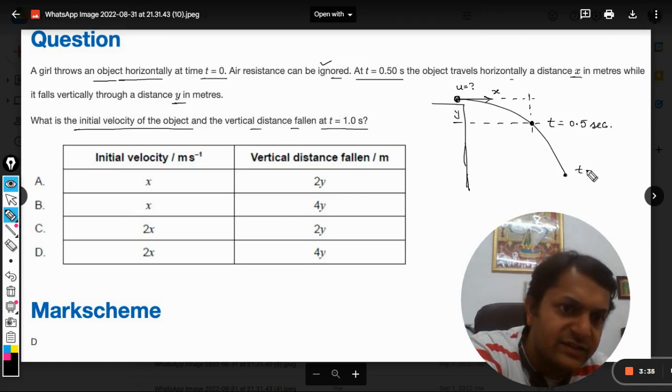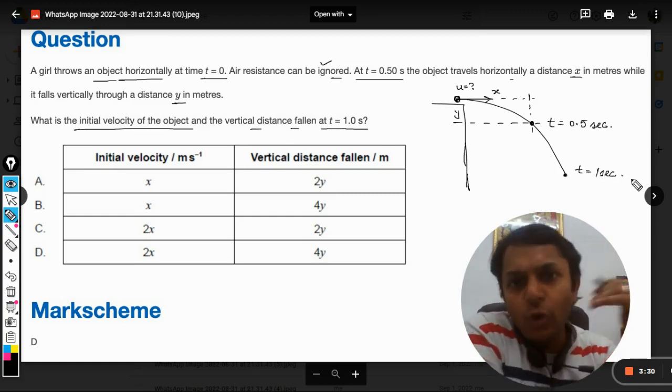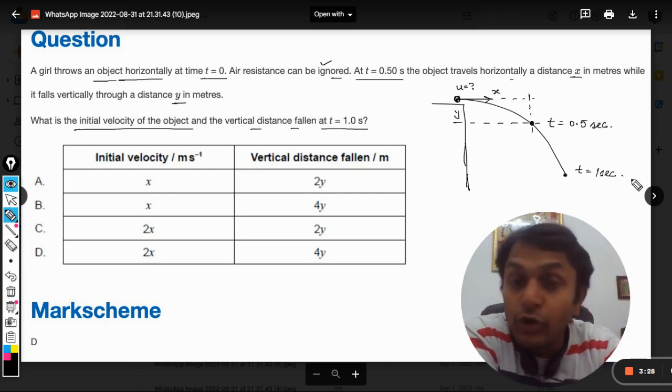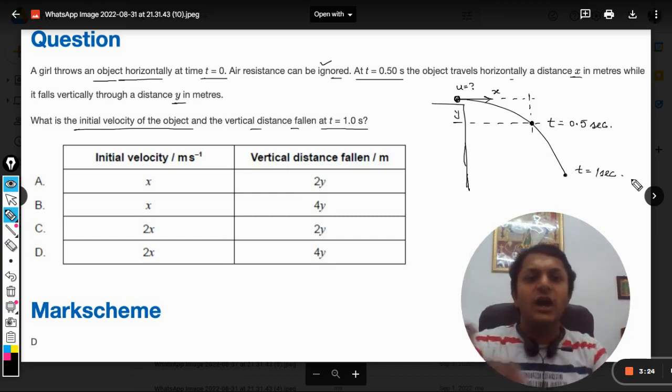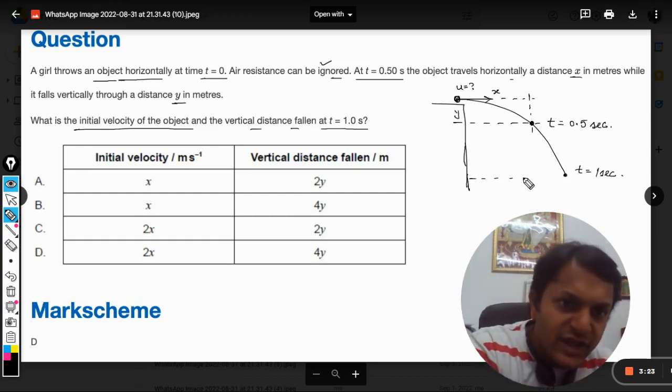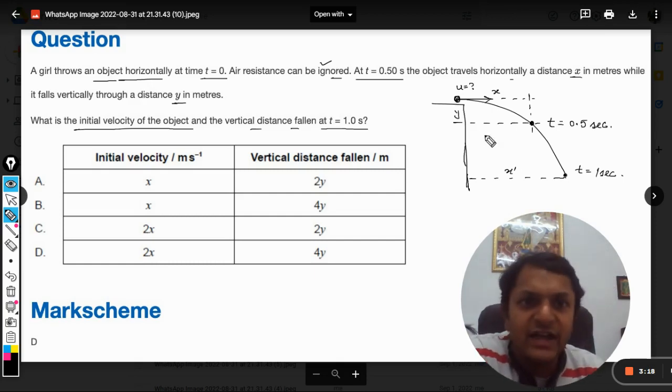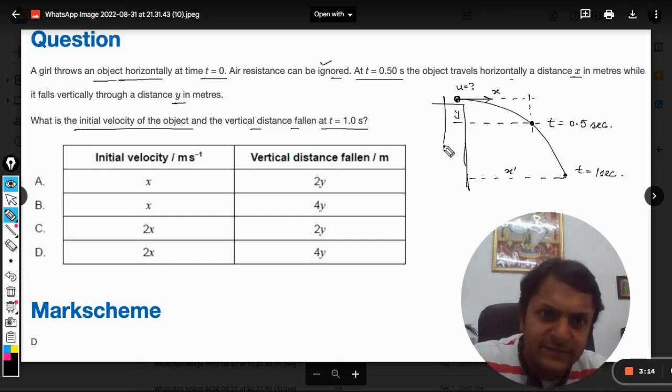Let us say it has reached here when one second is over - that is 0.5 seconds more. The body will definitely move along the trajectory downward, so it is traveling more x distance. I can say x dash, and the new vertical distance can be taken as y dash.